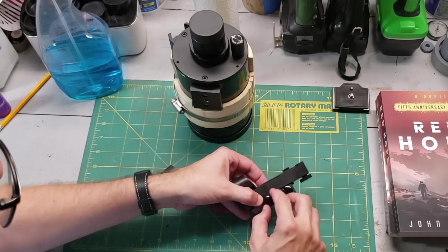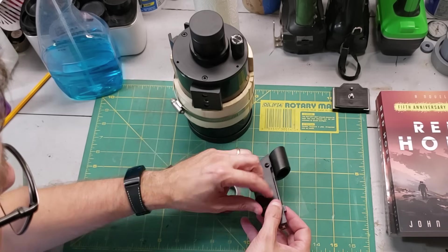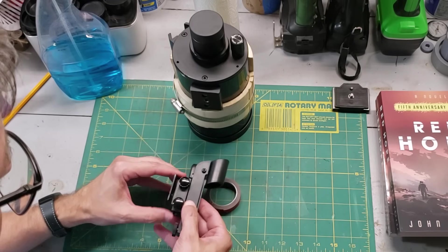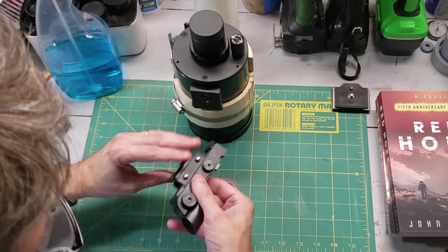You can get these either online, maybe at Home Depot. You can get them at Amazon for sure. But what they do is they make for a very quick release once this is mounted to the telescope.